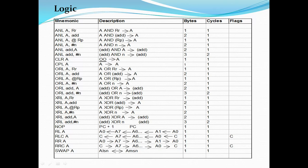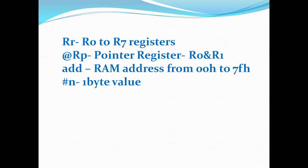RL is rotate left, equivalent to the left shift operator in C language — it rotates the accumulator value left. RLC is rotate left through carry. Similarly, there is rotate right of the accumulator value and rotate right through carry. Shift operations work only with the accumulator, not with any other operands. SWAP means the LSB part becomes the MSB part and the MSB part becomes the LSB part of the given number.